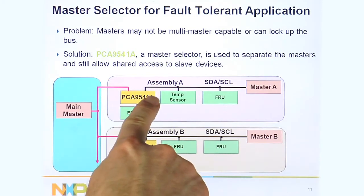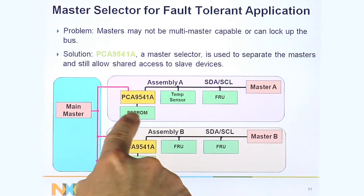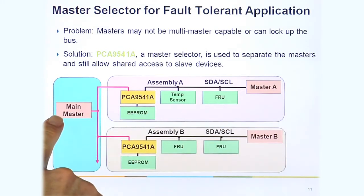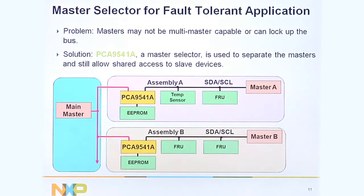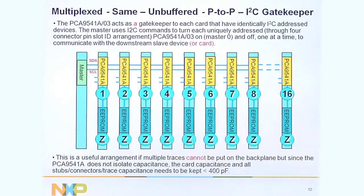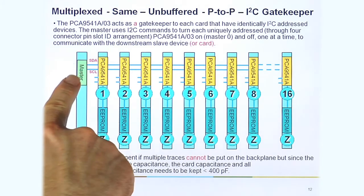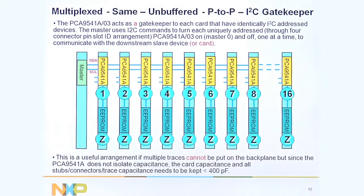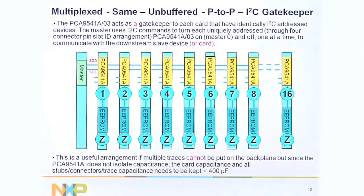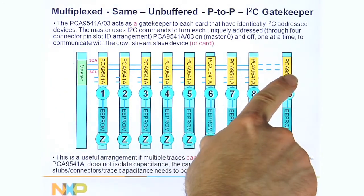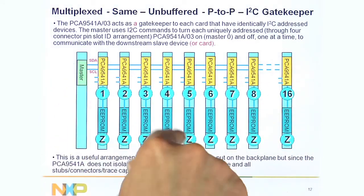Here's an example where we have the 9541A talking to an EEPROM or a FRU that needs to be shared between different masters. A master here needs to talk to the EEPROM, and this master needs to talk to it also. So it allows you to have masters talking to shared slaves without the masters being able to talk to each other. In another application, one master goes across the backplane — the EEPROMs all have the same address, the 9541A has different addresses, and the slash-03 version is initially turned off so no channels are selected. You can select one board to operate and then talk to the EEPROM.